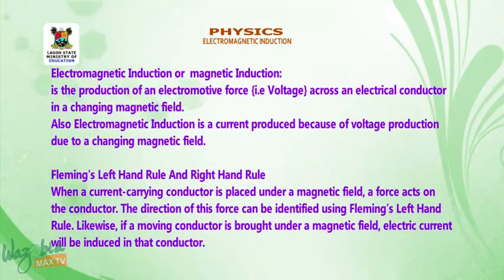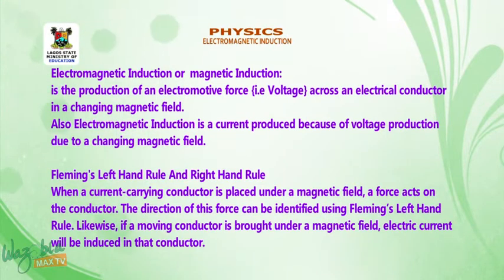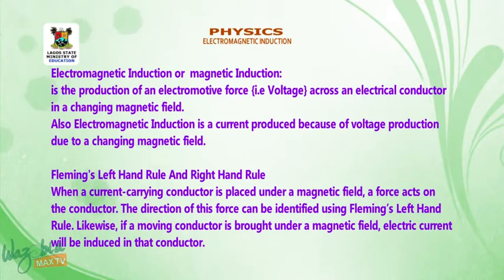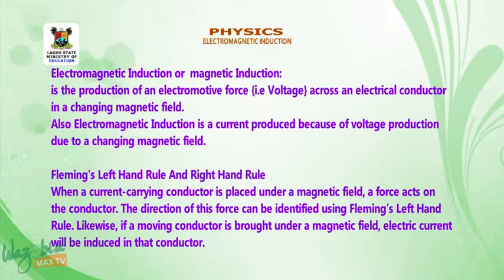Electromagnetic induction, or magnetic induction, is the production of an electromotive force — that is, voltage — across an electrical conductor in a changing magnetic field. Also, electromagnetic induction is a current produced because of voltage production due to a changing magnetic field.